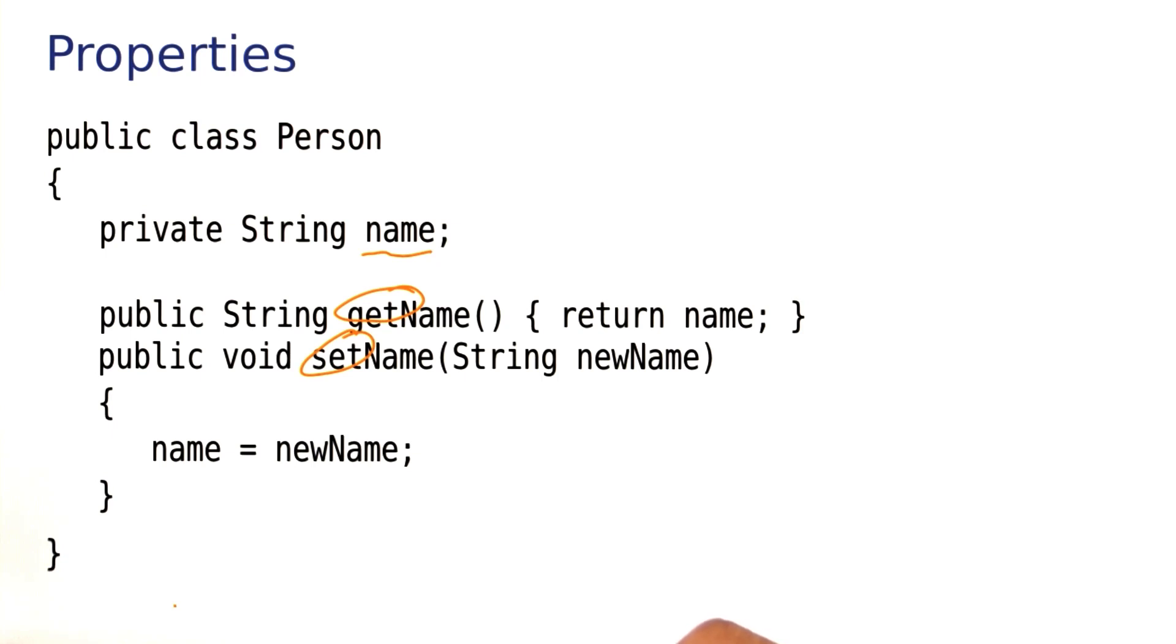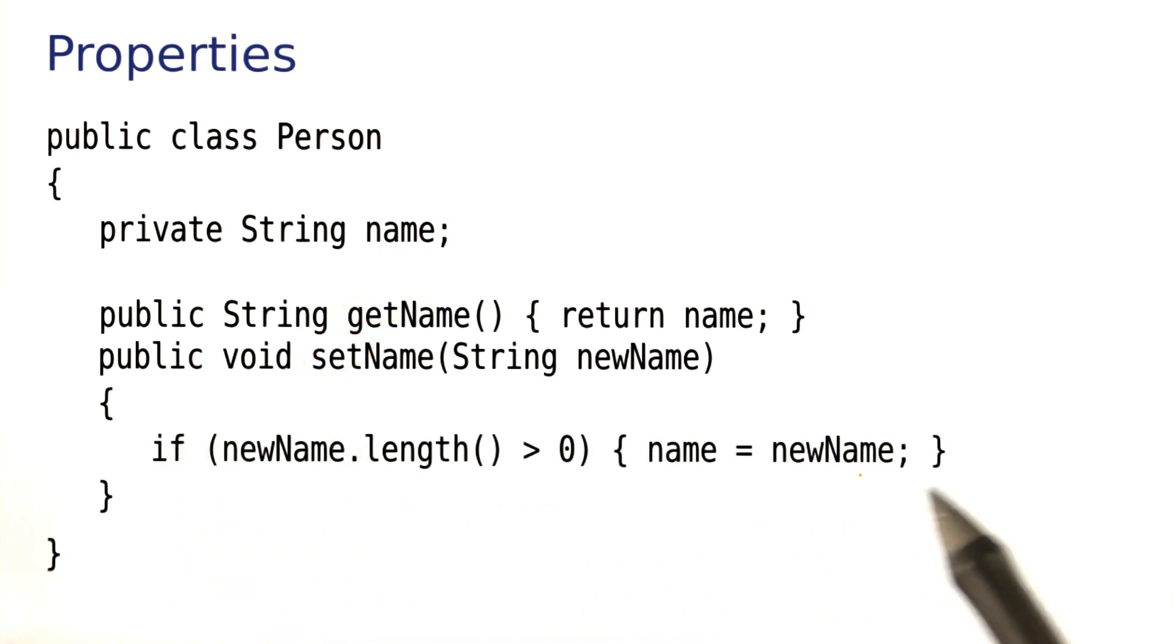There's some variations. Sometimes you do some error checking in the setter. Here we check that the new name is not the empty string, because no one's name should be the empty string.